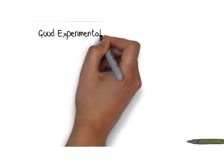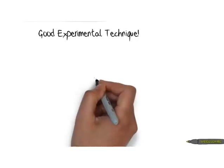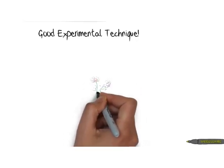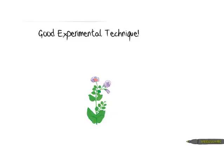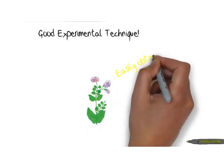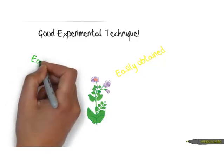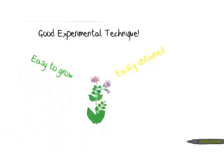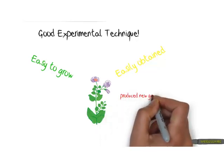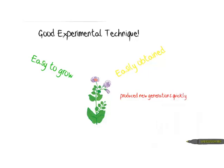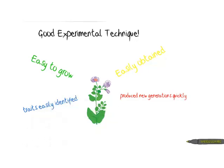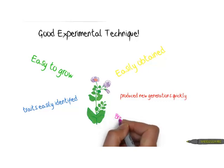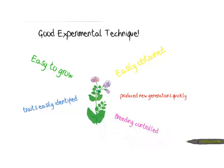Good experimental technique was essential — without it he wouldn't have achieved the results he did. The use of the pea plant was a very good choice: they were easily obtained, easy to grow, and produced new generations very quickly, so changes could be observed over short periods of time. He could also identify traits very easily — tall and short could be identified easily — and he could control the breeding very well.